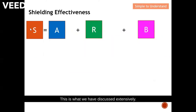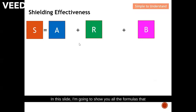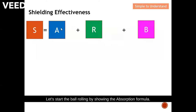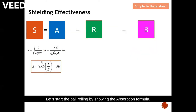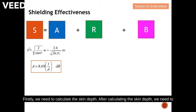This is what we have discussed extensively. Shielding effectiveness is a combination of absorption, reflection, and multiple reflection. In this slide, I'm going to show you all the formulas required to calculate the overall shielding effectiveness. Let's start by showing the absorption formula. These are the two formulas required to calculate the absorption loss. Firstly, we need to calculate the skin depth, and then substitute the skin depth into this equation to obtain the absorption loss.